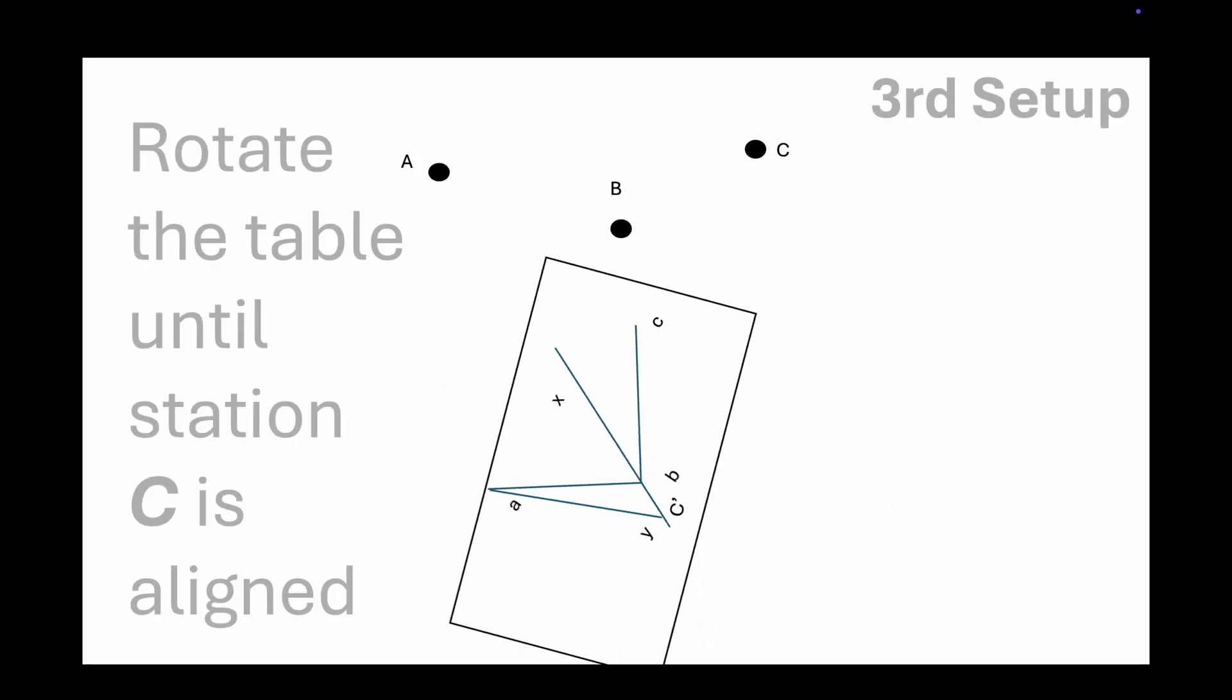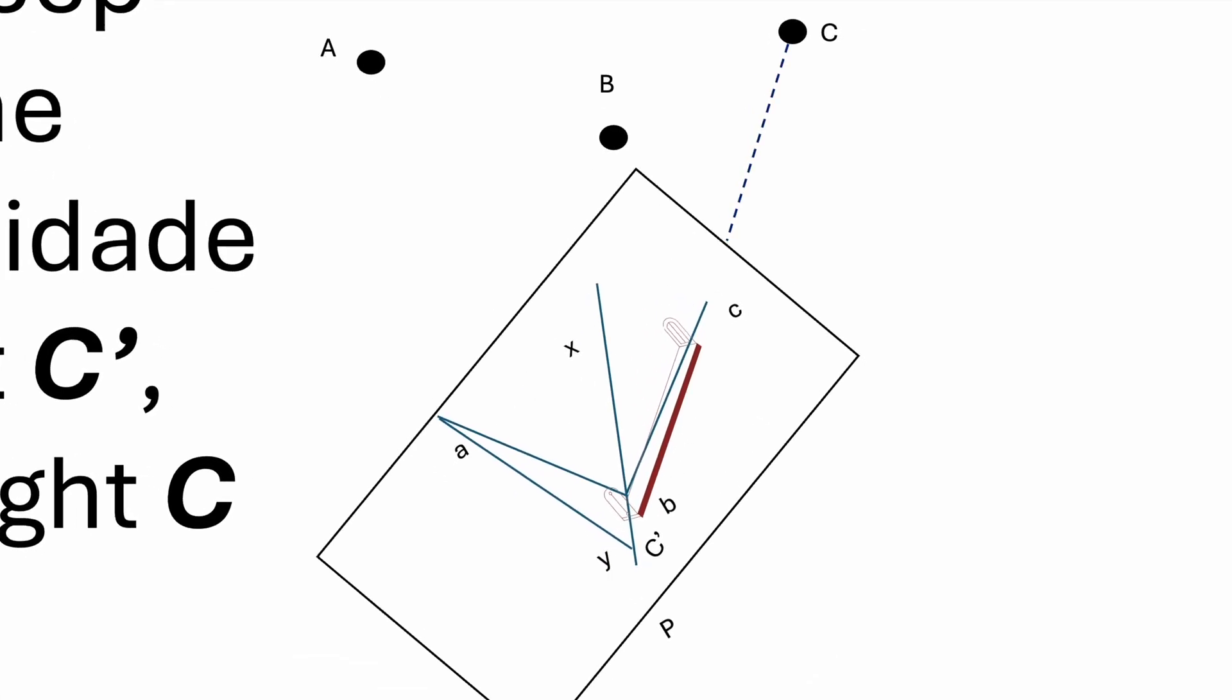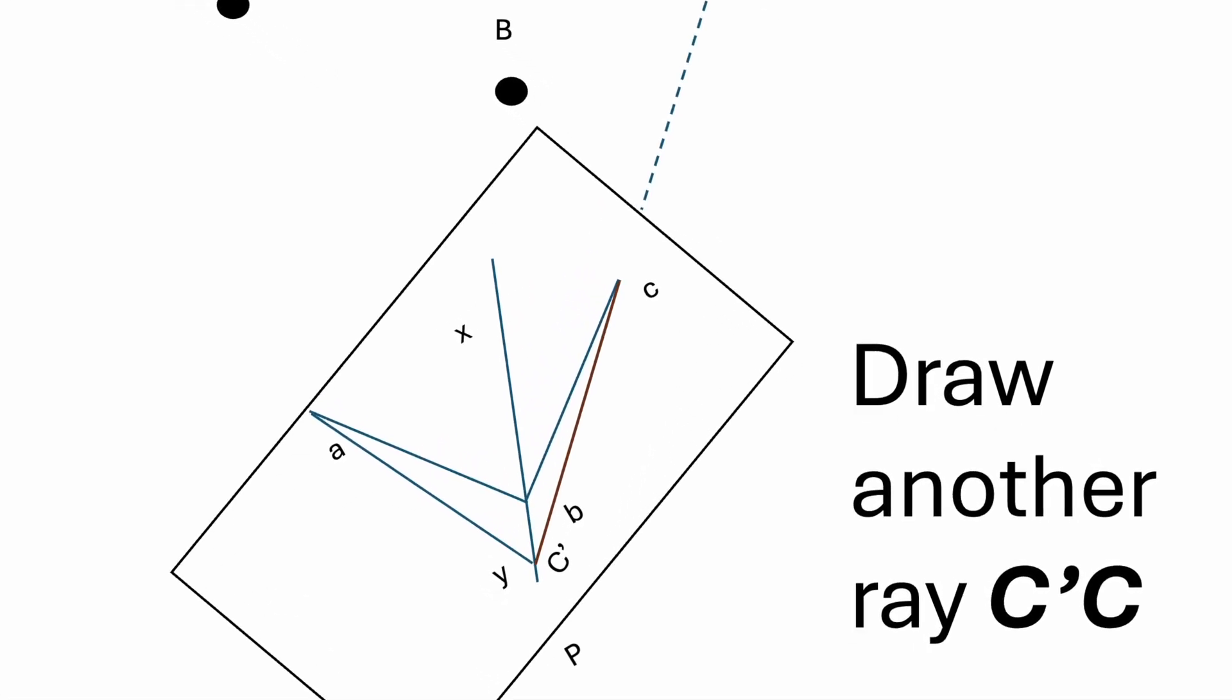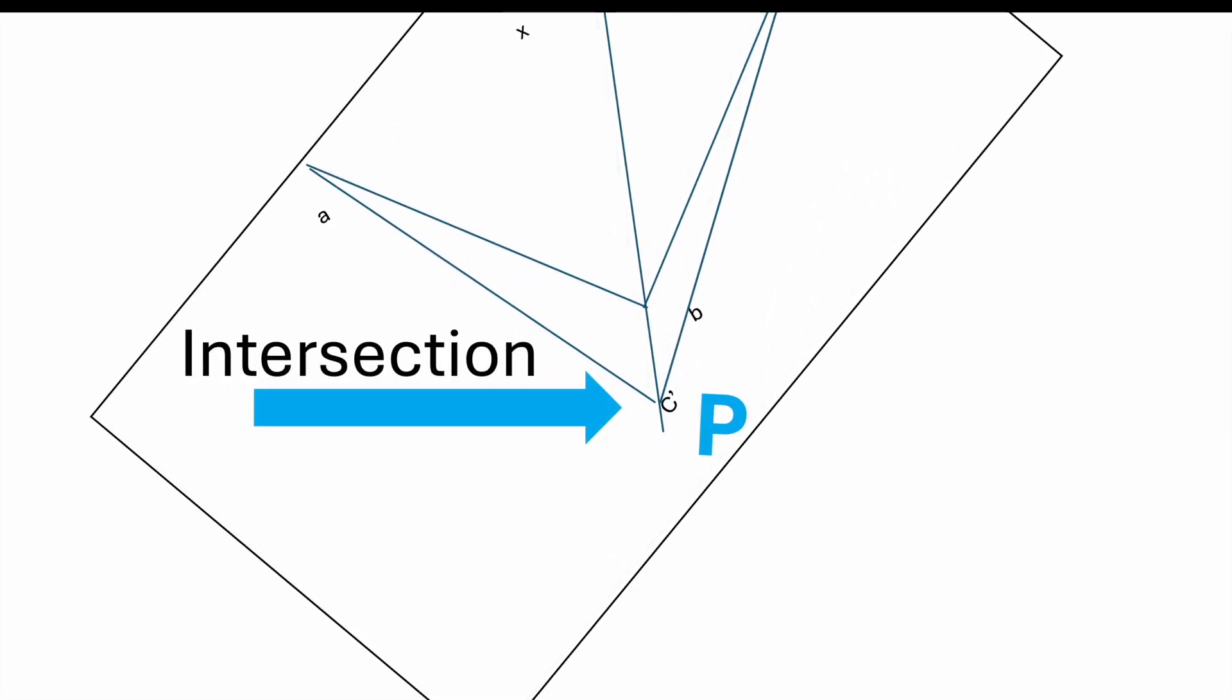Rotate the table again until station C is aligned. Keep the alidade at C dash and sight C. This gives us another ray C dash C. The intersection C dash will give us the new position P.